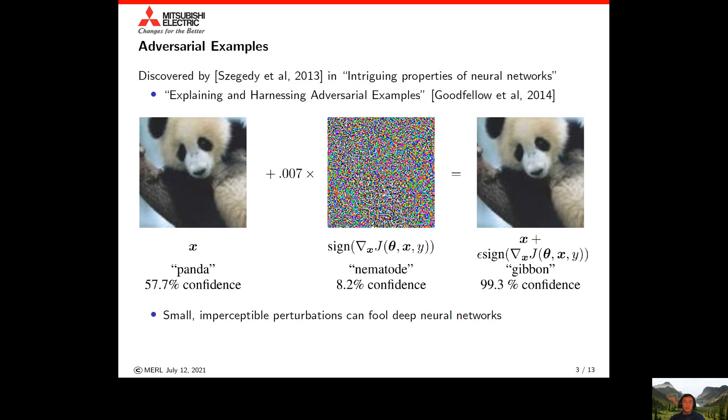This demonstrates that one can make very small, imperceptible perturbations to the input of a deep neural network and fool it completely.